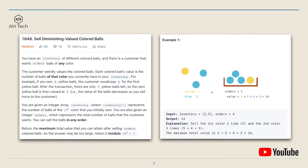For this example, we have two different colors of balls. The first color has two balls and the second color has five. The customer wants to buy four balls in total. The best way to sell is to sell the first color one time and the second color three times, so the total value would be 2 plus 5 plus 4 plus 3, which is 14.